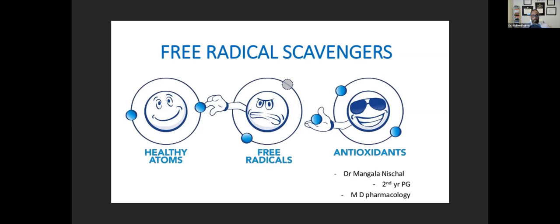Electrons are part of the atom, and all atoms have different electrons depending on what they are. Free radicals—these reactive oxygen species—what they do is their bar is not full, their circles are not full.